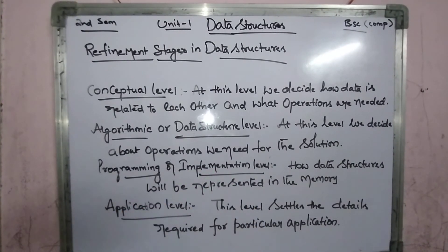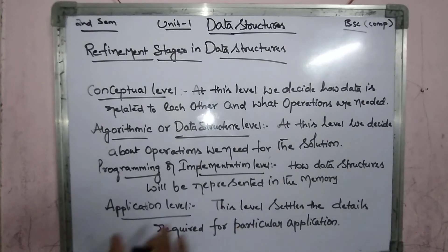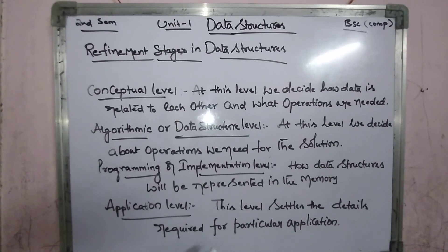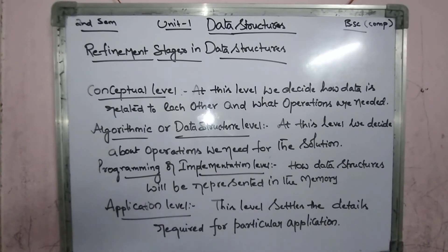The next one is the application level, which is the last level. Here we check the details required for a particular application and the requirements needed to solve a problem. Whatever requirements we want to address can be done at this application level.